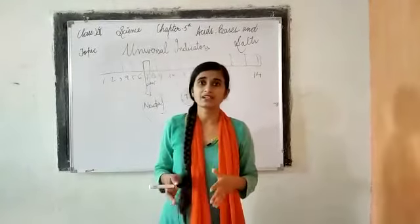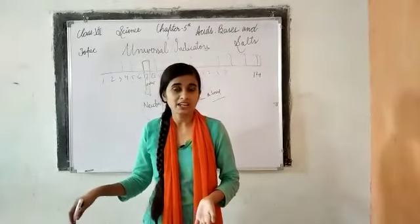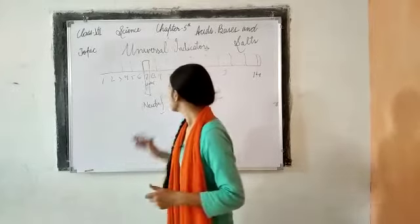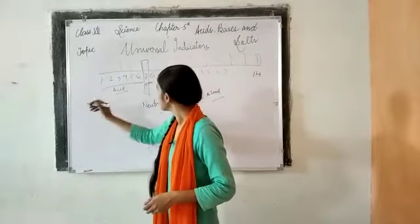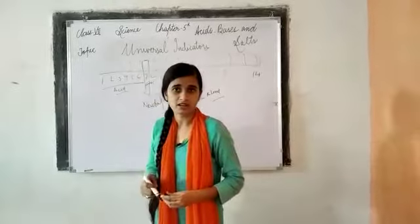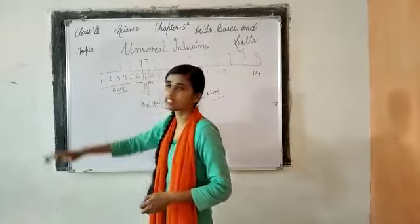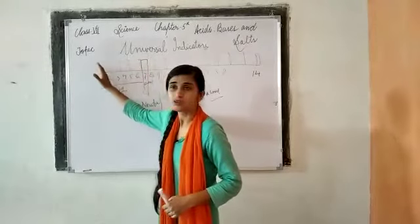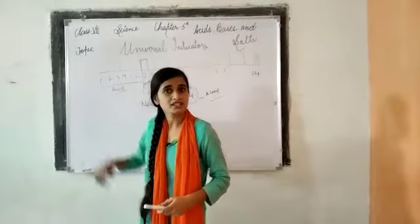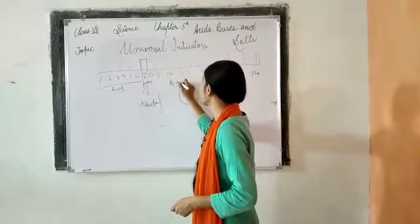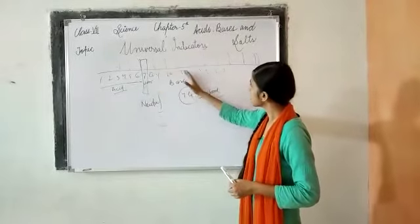To determine whether something is acid or base: if the pH value is at the center — that is, 7 — we say it is neutral. Values before 7, that is from 1 to 7, indicate acid. The further the value goes below 7, the stronger the acid — 7 se jitna kam jaega, utna strong acid hota jaega. And values above 7 indicate base — 7 se jitna zyada jaega, utna strong base hota jaega. The universal indicator shows colors corresponding to these pH values, allowing us to match the color to determine the nature of the solution.